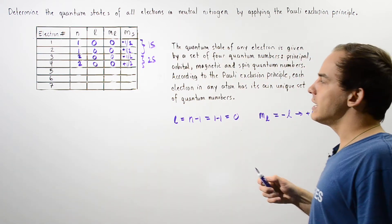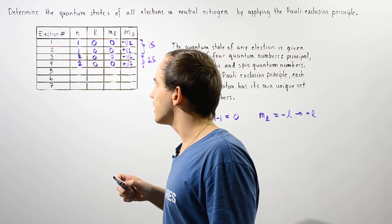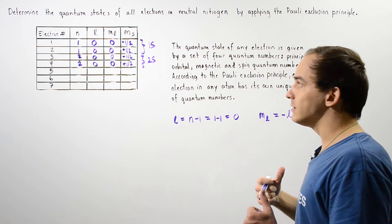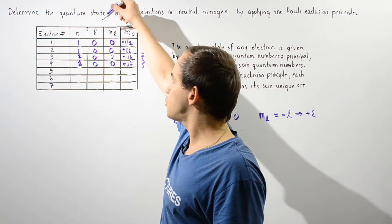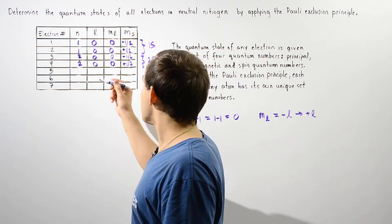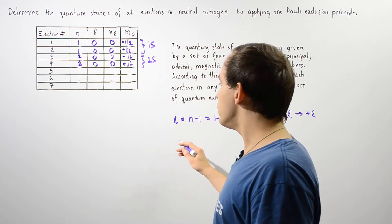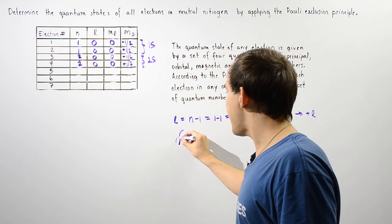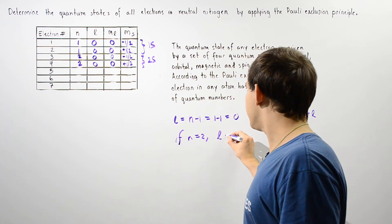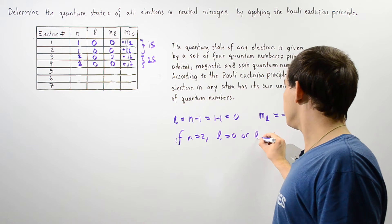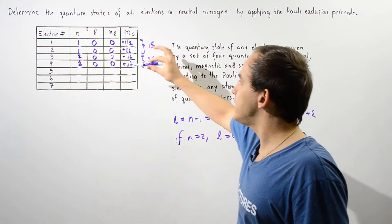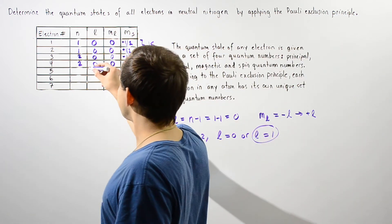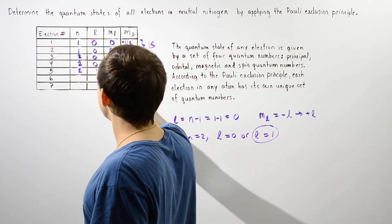Now the 2s subshell is completely filled. The next level is n equals 2, L equals 1. Recall that if n equals 2, there are two possibilities for L: 0 or 1. Since L equals 0 is already used up, we now look at L equals 1. So for electrons five and six, n equals 2 and L equals 1.